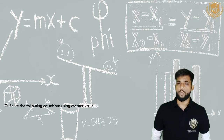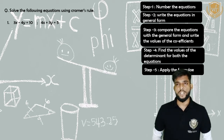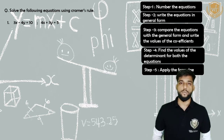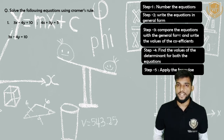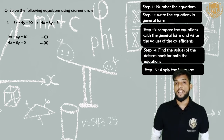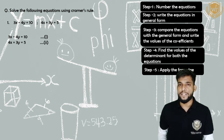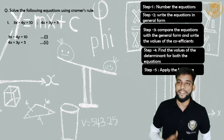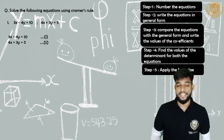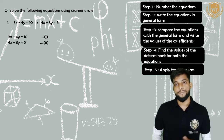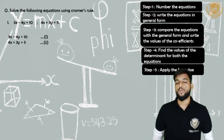Now let us solve a problem using Cramer's Rule. The two equations are: 3X minus 4Y equals to 10, and 4X plus 3Y equals to 5. Step one: number the equations — equation 1 and equation 2. Step two: check general form. 3X minus 4Y equals 10 — yes. 4X plus 3Y equals 5 — yes. Both equations are already in general form, so step two is done.